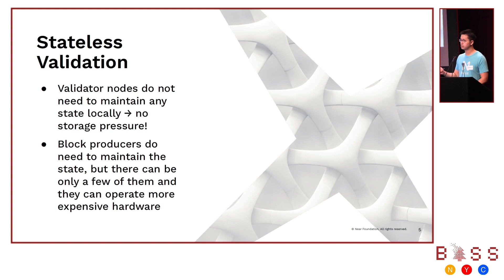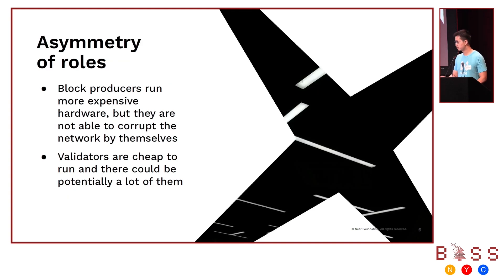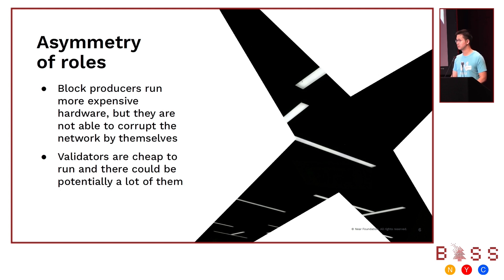This overall design is called weak statelessness because there's still an entity — block producers — tracking the entire state of the network. Because validators don't need to track any shard state, they purely rely on the witness to validate blocks, which greatly reduces storage pressure on validators. For block producers, yes, they still maintain the state of the entire network, but we don't need many of them, so they can afford more expensive hardware. The only damage they can do is censor transactions, which is already something they can't do today. And validators, being very cheap to run, can greatly support decentralization.